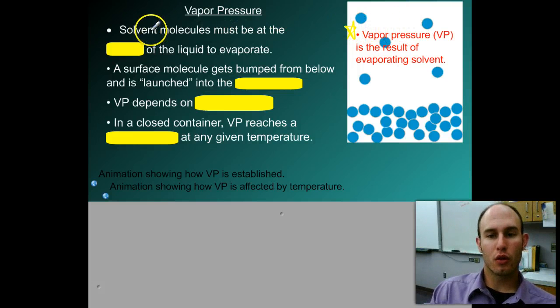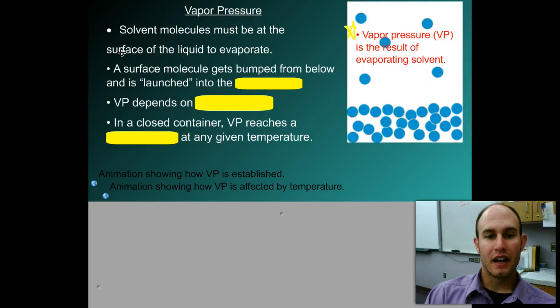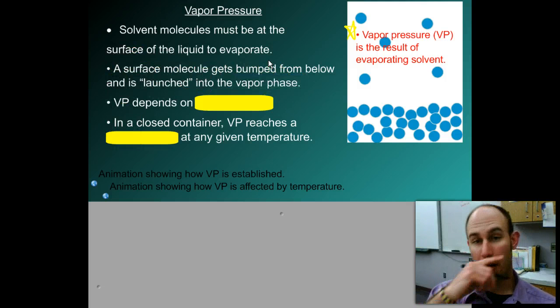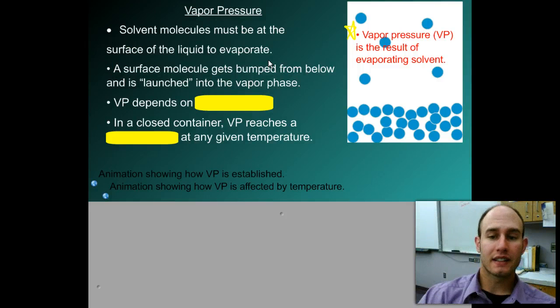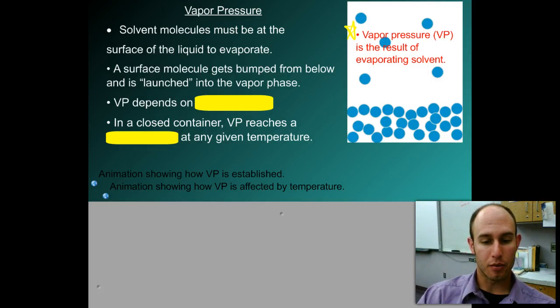Solvent molecules must be at the surface of the liquid to evaporate. A surface molecule gets bumped from below and is launched into the vapor phase, and that's kind of what I was depicting over here in the diagram. Now let's actually go ahead and take a look at what something actually looks like when it's forming a vapor pressure.